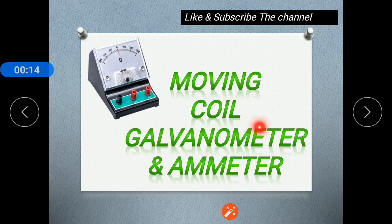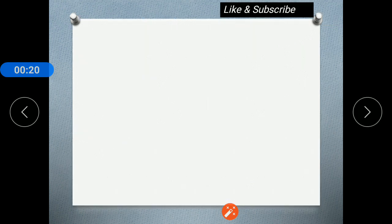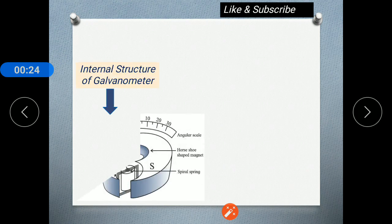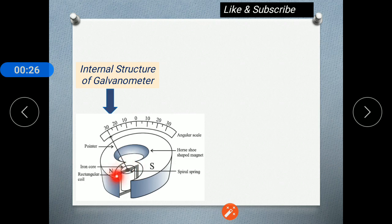A galvanometer is a device which is used to measure or detect very small electric current through the circuit. The internal structure of a galvanometer consists of different parts: a soft iron core, rectangular coil, spiral spring, a horseshoe shaped magnet, pointer, and the angular scale.